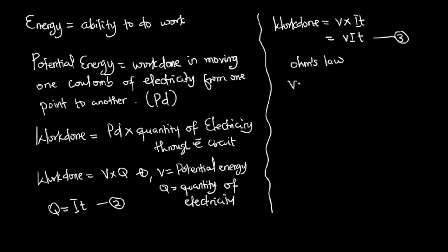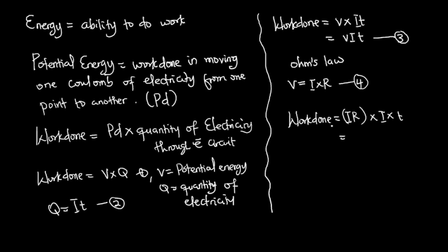From Ohm's law, the voltage across a circuit is equal to the product of the current and the resistance: V = IR (equation four). Substituting into the work done formula W = VIt, we replace V with IR to get W = IR × I × t, which gives us W = I²Rt. This is equation five.